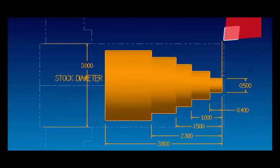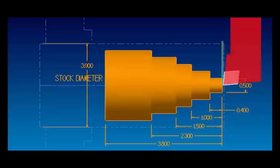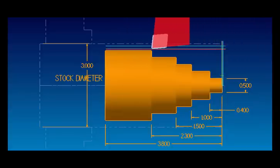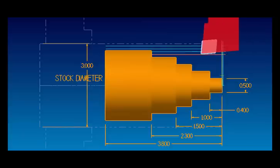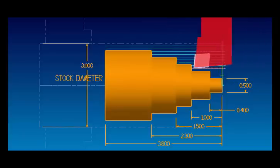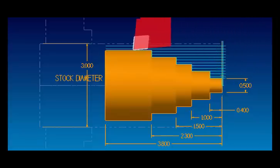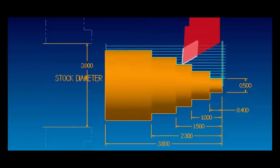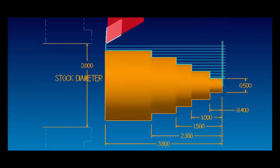In lessons one and two we used the same shape and talked about the G72 rough facing canned cycle and the G71 rough OD turning. We take a couple of passes to rough the face and then go right into the G71 canned cycle to rough the OD, taking 100 thousandths depth of cut until the whole shape is roughed out, leaving 30 thousandths for a finish pass. Then tool number two finishes the face and OD. Let's take a look at the code and see how the G70 finishing cycle is used.